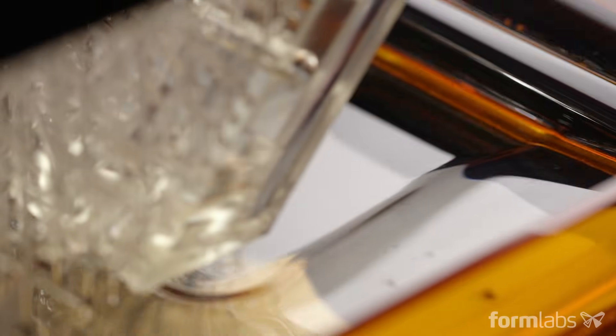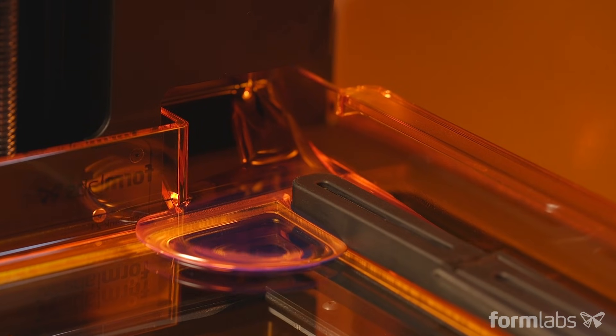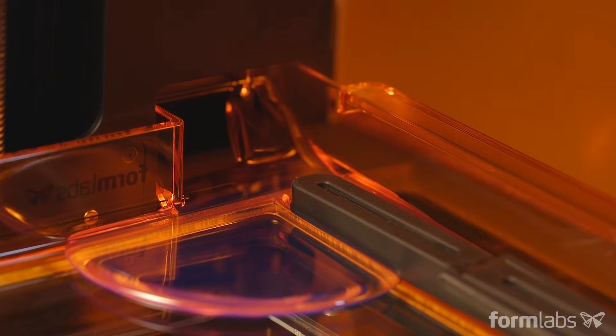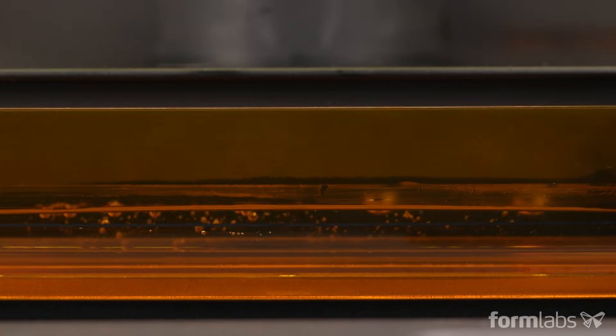Upside down or inverted stereolithography is the most common SLA system. Depending on the machine, resin is either poured into a tank by a user or dispensed automatically from a cartridge. At the beginning of the print, a build platform is lowered into the resin, leaving only a thin layer of liquid in between the platform and the bottom of the tank.